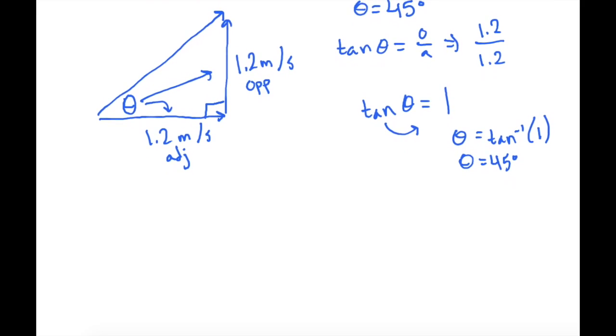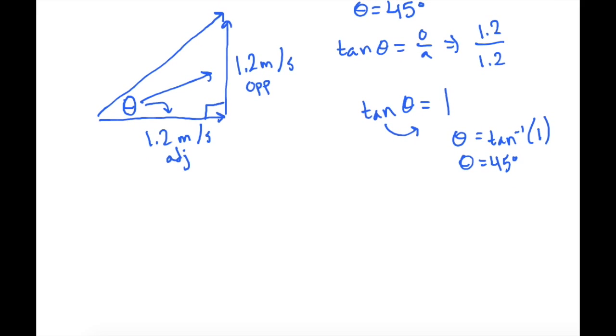Now we want to know what the speed is as well. So we want to know what this hypotenuse is right here. So we can use Pythagorean's theorem. We have the two legs, which will be a squared. And the second leg, which will be b squared, equals c squared. So we have 1.2 squared plus 1.2 squared equals c squared. But we just want c, so let's square root both sides. So we have c, or the hypotenuse, is equal to the square root of 2 times 1.2 squared.